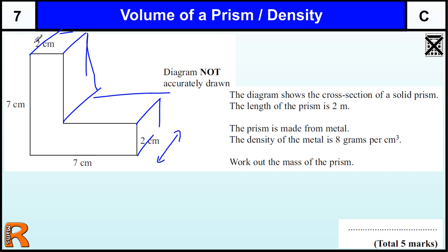Now, when we're doing shapes, we should always be consistent with our units. Usually best to change to the smaller of the units. Noting that this is in centimeters cubed, we need to have this in centimeters, so two meters is 200 centimeters.